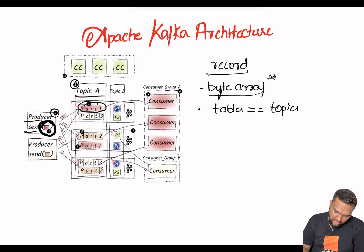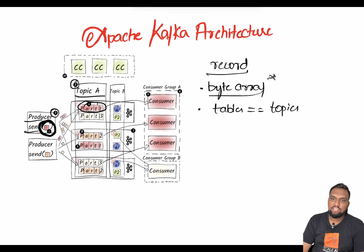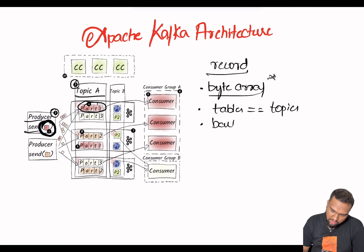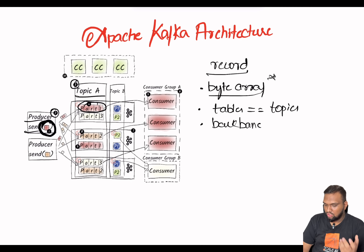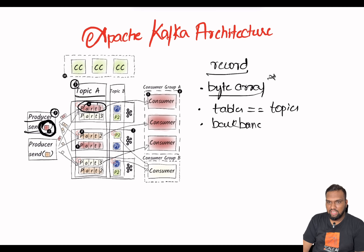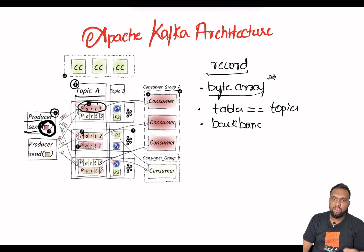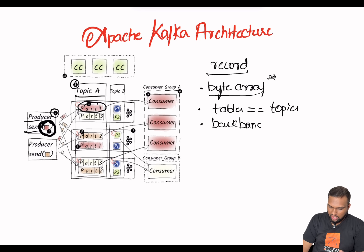Looking at the architectural diagram, we have partitions, which are the backbone of Kafka's performance. Without them the entire Kafka ecosystem would not work, because parallelism and message processing depend on dividing partitions. Topics are divided into partitions to parallelize and scale the processes. To ensure fault tolerance and high availability, partitions are replicated across the brokers.